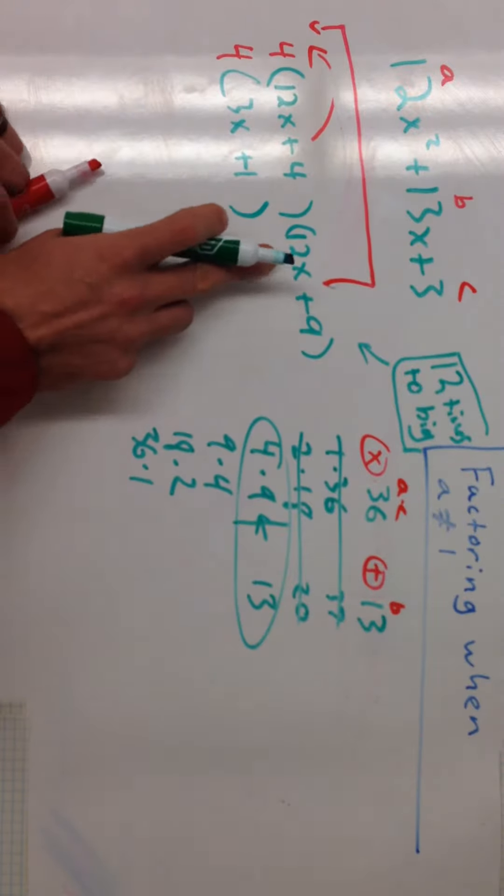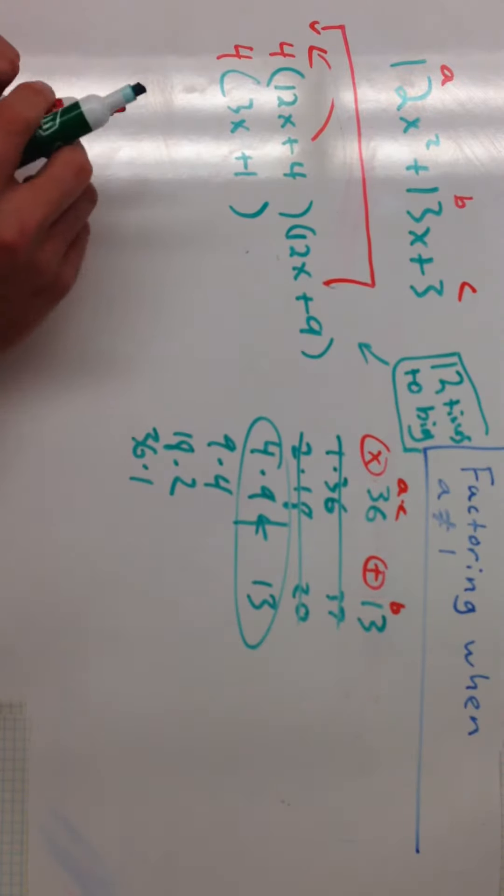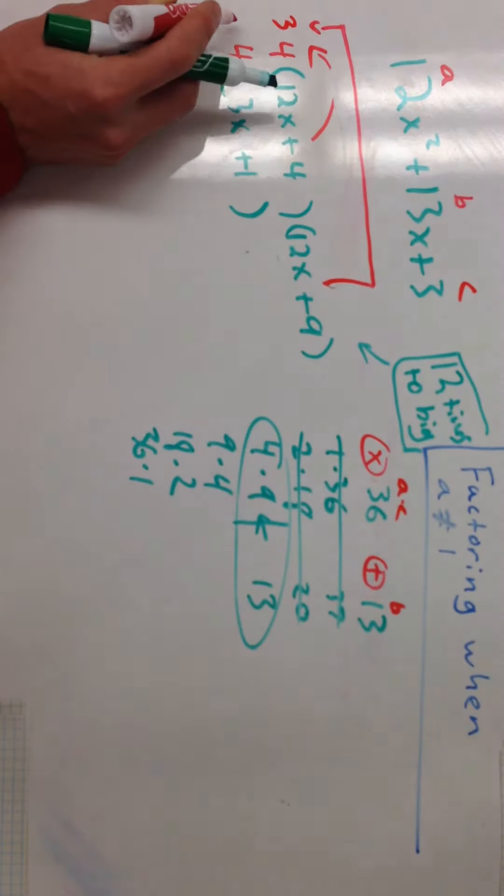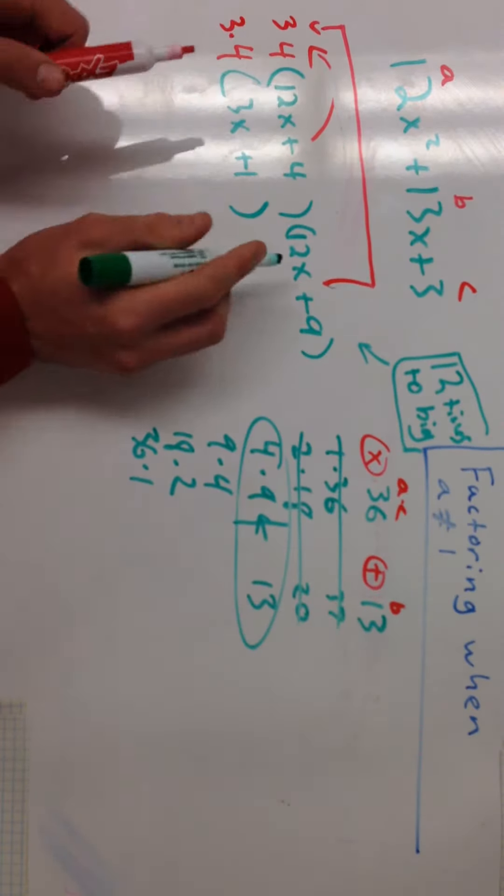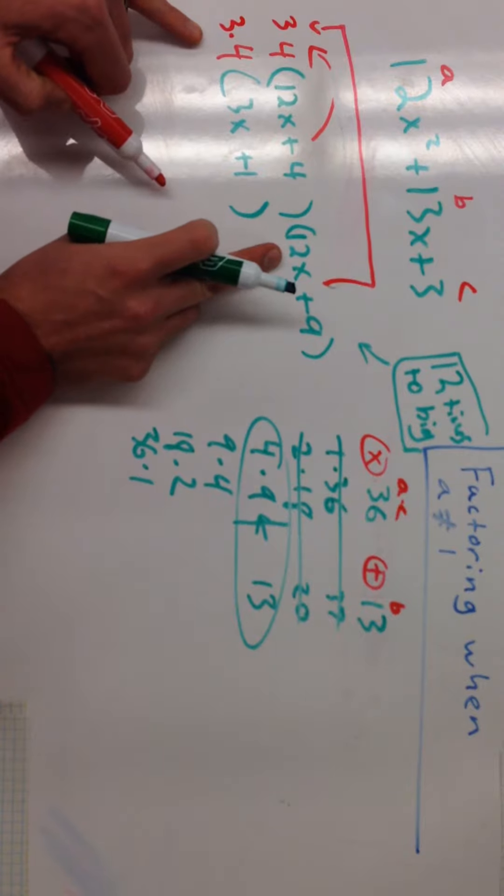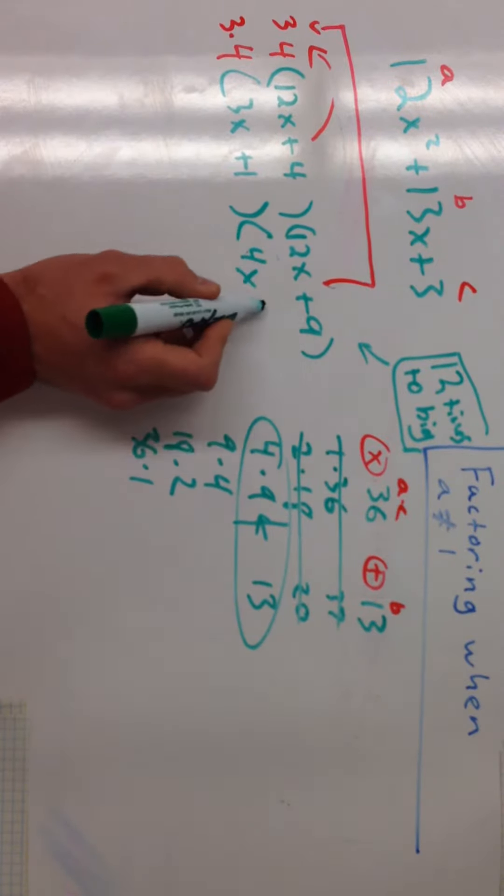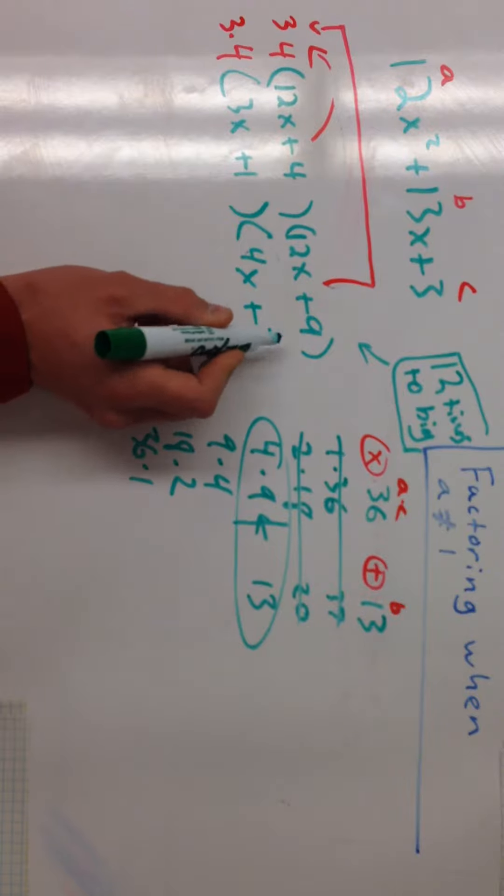I'm going to do the same thing over here, 12x plus 9. The biggest thing that I can take out of that is I can take a 3 from both of those. If I take a 3 from 12, that'll become 4x. If I take a 3 from 9, that'll become 3.